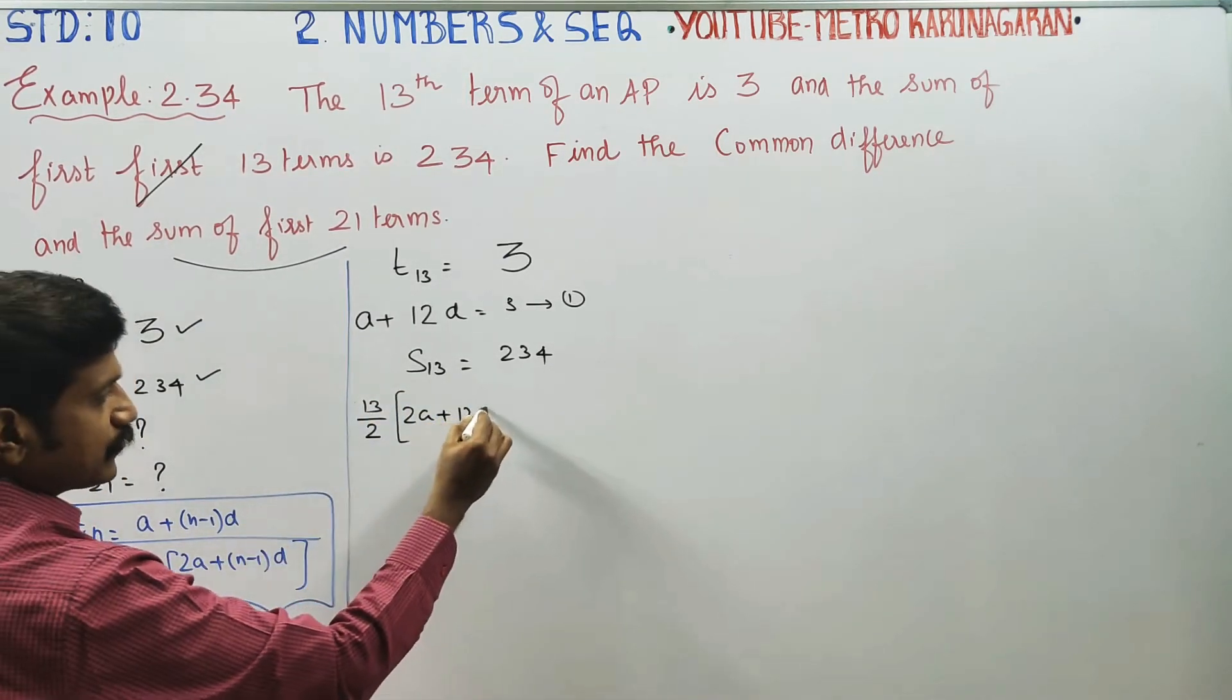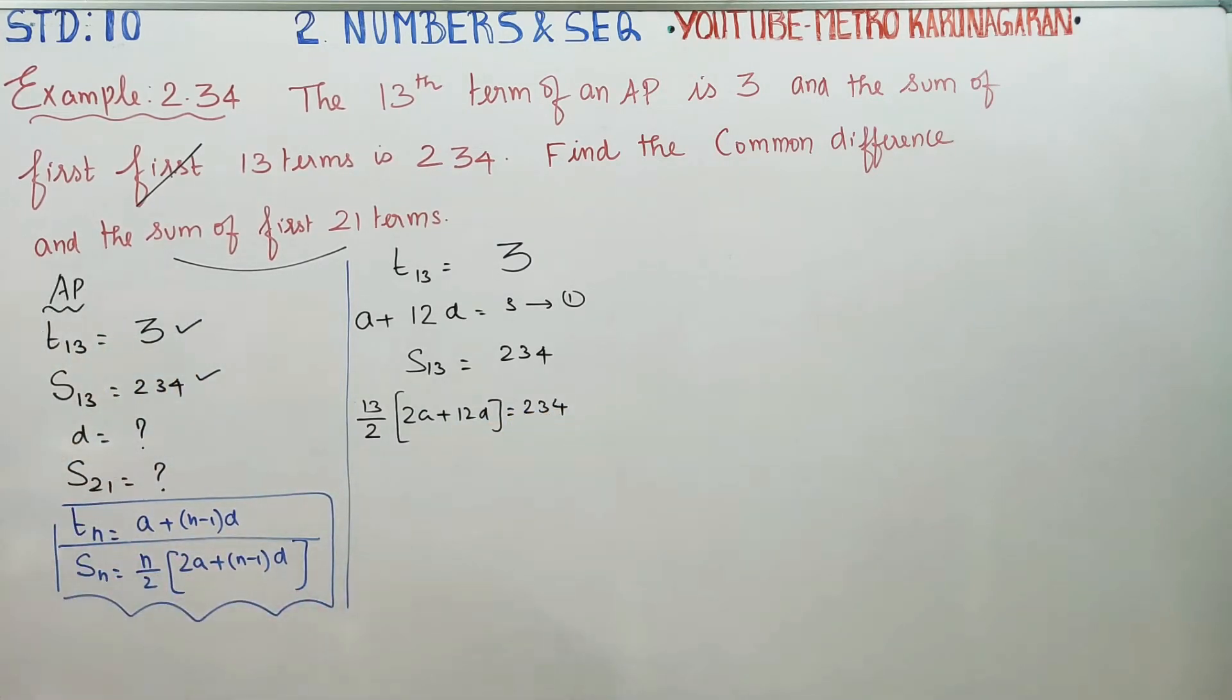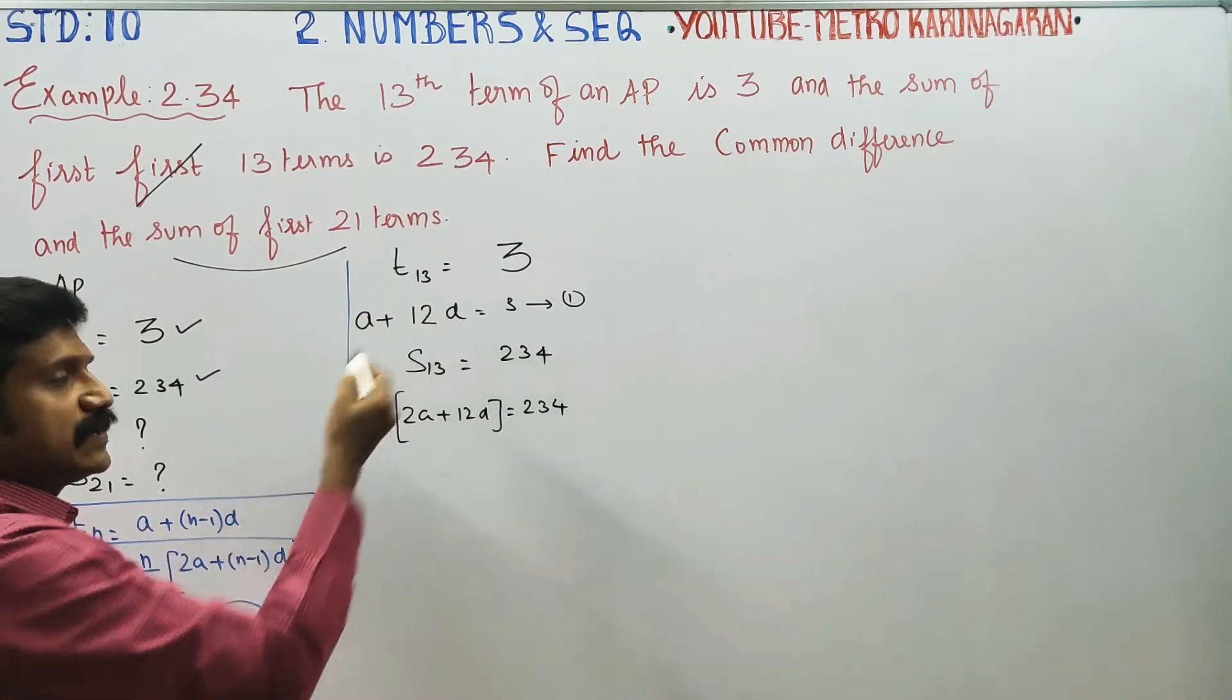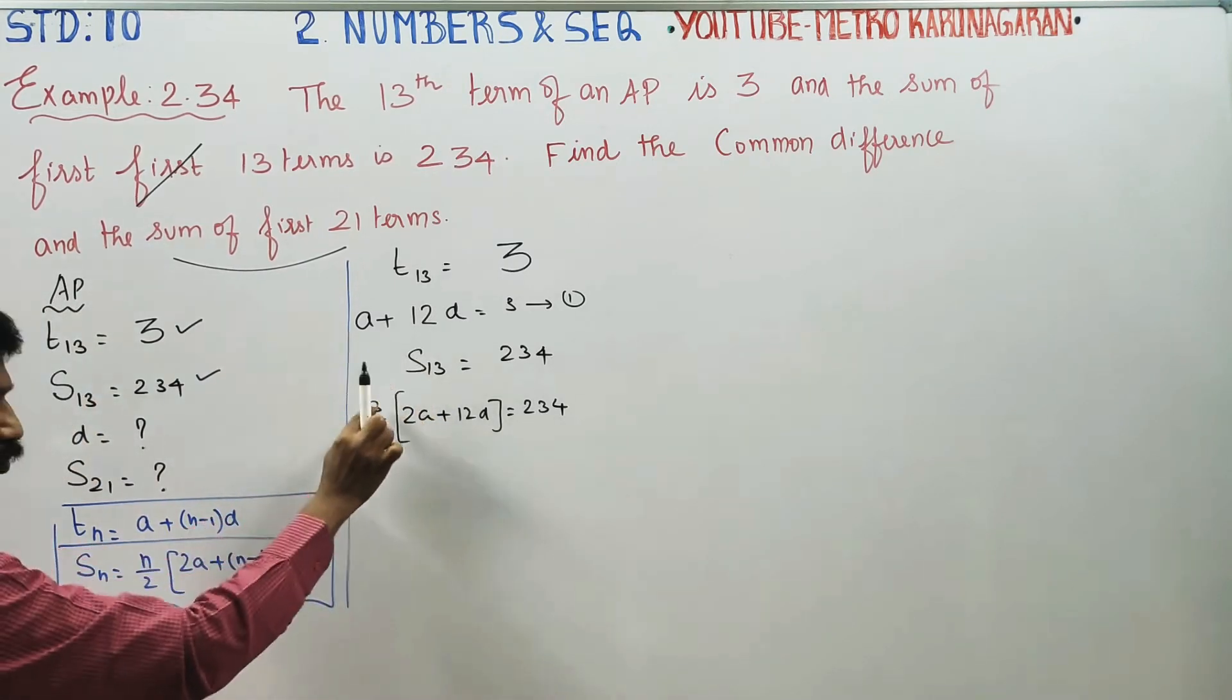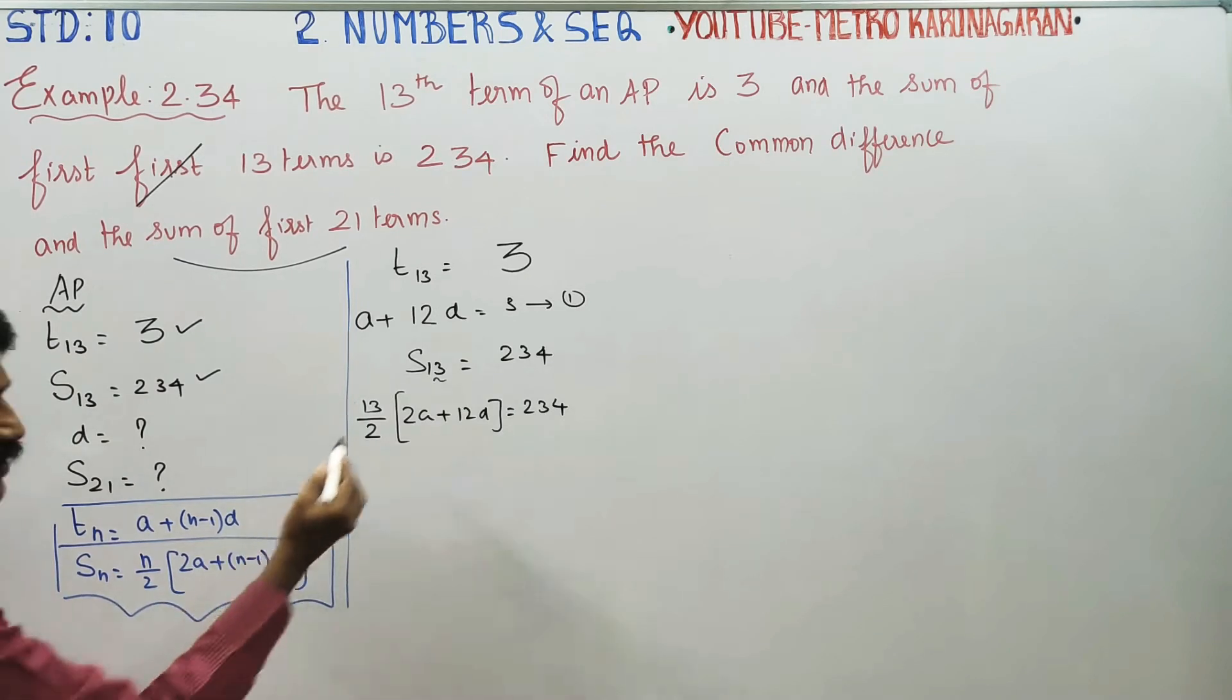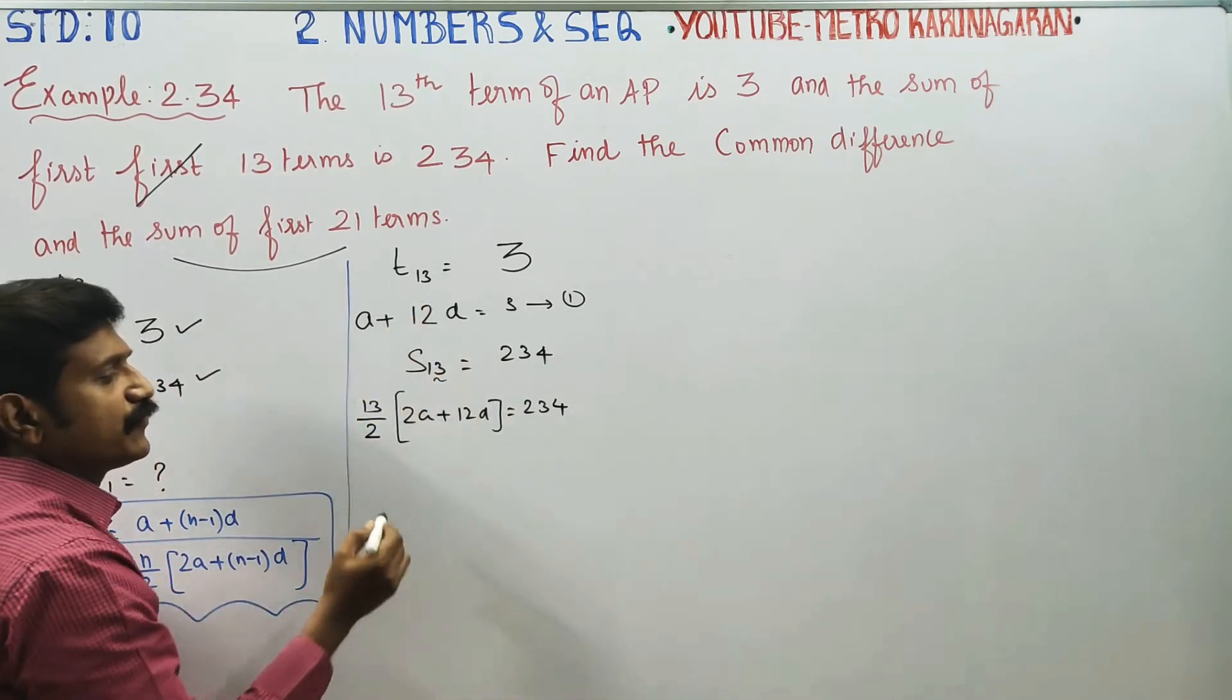So 13 by 2 times 2A plus 12D equals 234. This is the T13 and S13 formula setup.